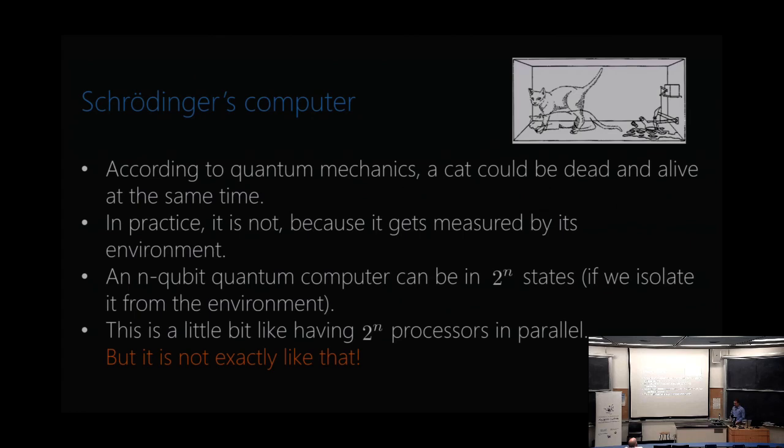And so this leads, in a lot of these sort of less careful expositions of quantum computing that you'll see in science magazines or newspapers, popular press, they say, oh, basically, a quantum computer is exponential parallelism. It's like having a parallel computer with two to the n processors. But that's really not quite right.